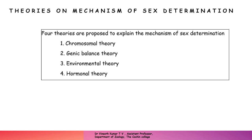Moving on to the mechanisms of sex determination, there are many theories proposed to explain sex determination in animals, because different animals have different mechanisms. Mainly there are four different types: the chromosomal theory of sex determination, gene balance theory, environmental sex determination, and hormonal sex determination. These are the major mechanisms by which organisms determine their sex.